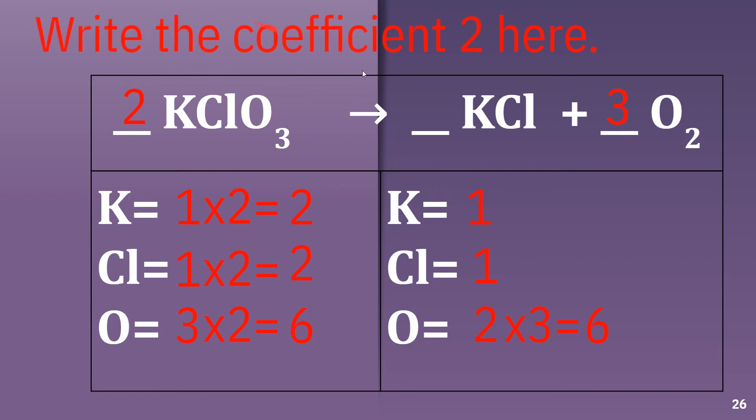So write the coefficient up here, which is going to be 2. They multiply times 2 here and here. So potassium 1 times 2 is 2, and so you have 2 coefficient times 1 potassium, that's 2. 2 coefficient times 1 chlorine, that is also 2.